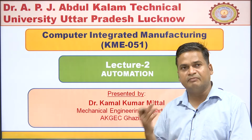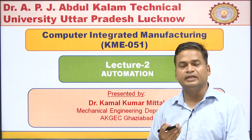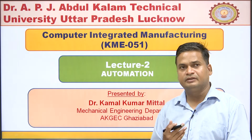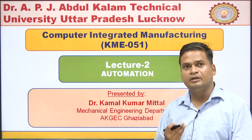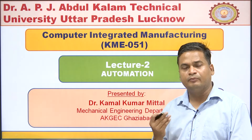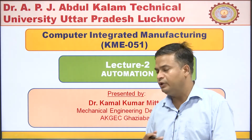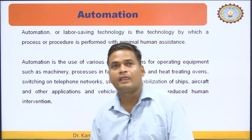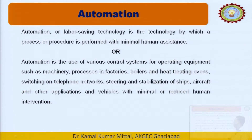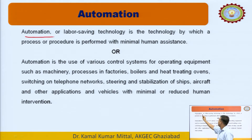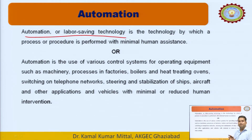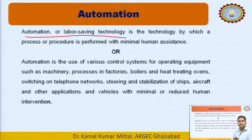We will also discuss with examples the different elements like power, control system, program, and processes. Automation, or labour-saving technology, means minimum involvement of human beings. It is the technology by which a process or procedure is performed.